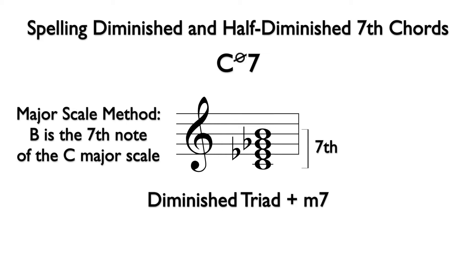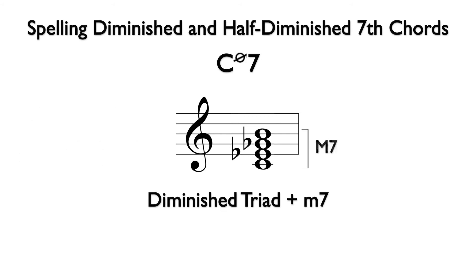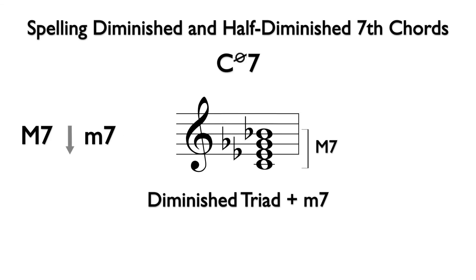By identifying B as the 7th note of the C major scale, we know that B is the major 7th. Also, if we invert the interval, we find that B to C is a minor 2nd, which is the inversion of a major 7th. If we lower the B to B flat, we have a minor 7th, and our chord fits the formula for a half-diminished 7th chord.